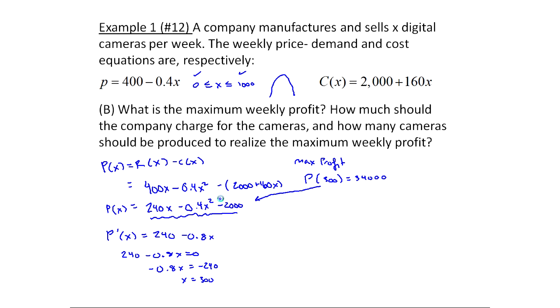Okay, so I got my maximum profit now. What price should we use? That's when you plug that into right here. And so it'd be 400 minus 0.4 times 300, which is 280. Okay, so now I'm going to summarize all this stuff. So we have a max weekly profit.